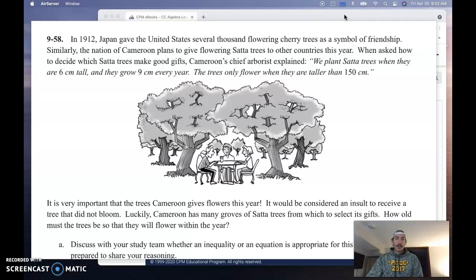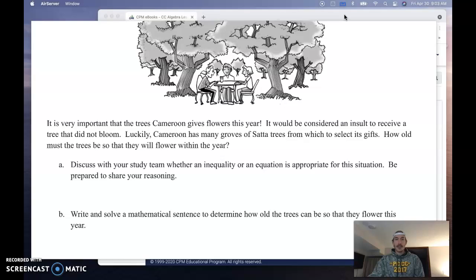In 1912, Japan gave the U.S. several thousand flowering cherry trees as a symbol of friendship. Similarly, the nation of Cameroon plans to give flowering sada trees to other countries this year. When asked how to decide which sada trees make good gifts, Cameroon's chief arborist explained, We plant sada trees when they are 6 centimeters tall and they grow 9 centimeters every year. The trees only flower when they are taller than 150 centimeters. They plant them when they are 6 centimeters tall. There's my starting height. And here is their growth rate. And the trees only flower when they are taller than 150. It doesn't say when they are 150. It says when they're taller. So we're going to explore that in a little bit.